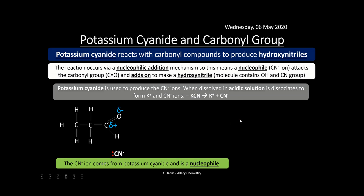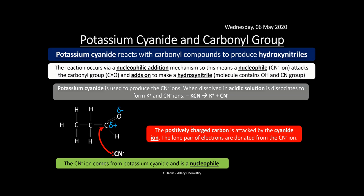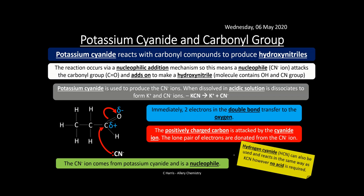The CN⁻ from potassium cyanide is the nucleophile — remember, a nucleophile means nucleus-loving, and it has a lone pair of electrons. Those lone pair electrons move onto the delta-positive carbon, breaking the double bond. The positively charged carbon is attacked by the cyanide, the lone pair is donated from CN⁻, and immediately the two electrons from the C=O double bond transfer to the oxygen.